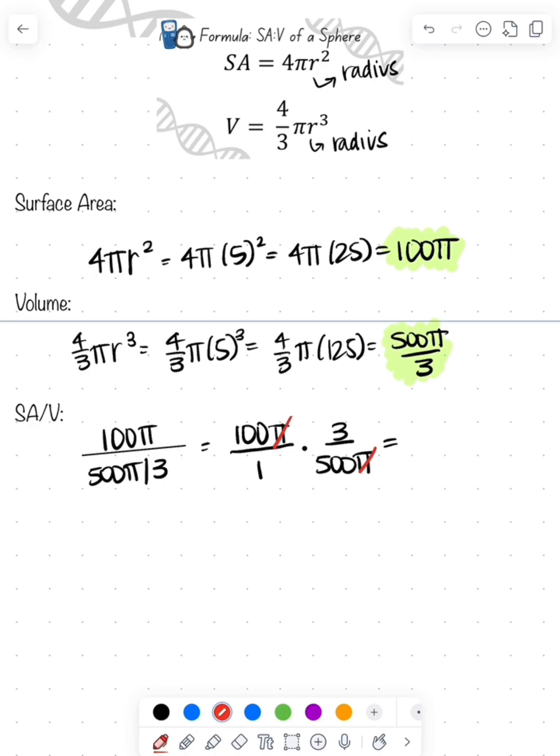The π's are going to cancel out, and then you can reduce 100 and 500 to 1 and 5, so 3 divided by 5 is our answer, which is 0.6.